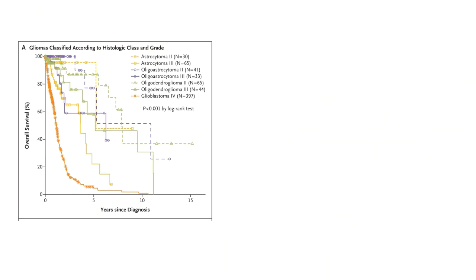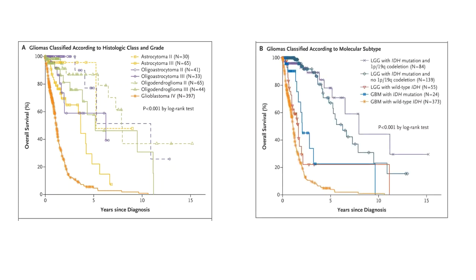Just by incorporating two molecular markers, we can achieve a magical transformation where this entire clutter is elegantly separated into clean, non-overlapping curves with clear clinical outcomes. The accuracy of risk prediction vastly improved, with oligodendrogliomas now boasting the best outcomes while IDH wild-type glioblastoma and IDH wild-type low-grade gliomas suffer from inferior prognosis. This is a testament to the power of molecular analysis in revolutionizing our understanding and treatment of complex diseases.